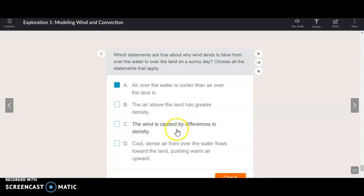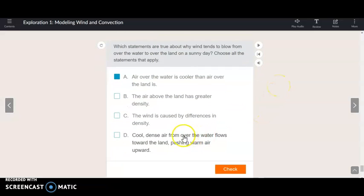C. The wind is caused by differences in density. That is true. I don't remember reading that up there. Maybe I did. But that is absolutely true. And I've got a sweet picture that was in yesterday's slideshow that showed that. So, true.